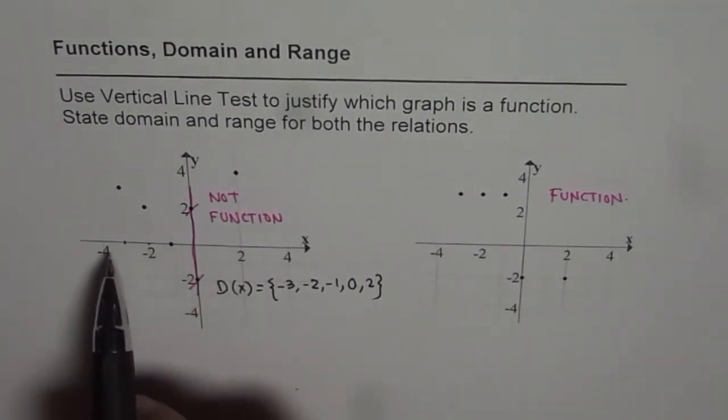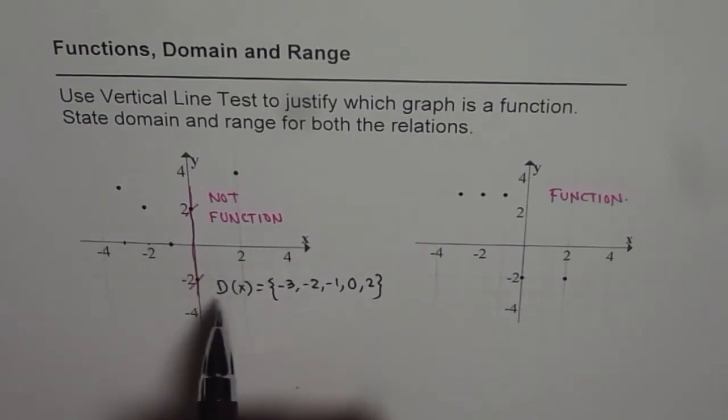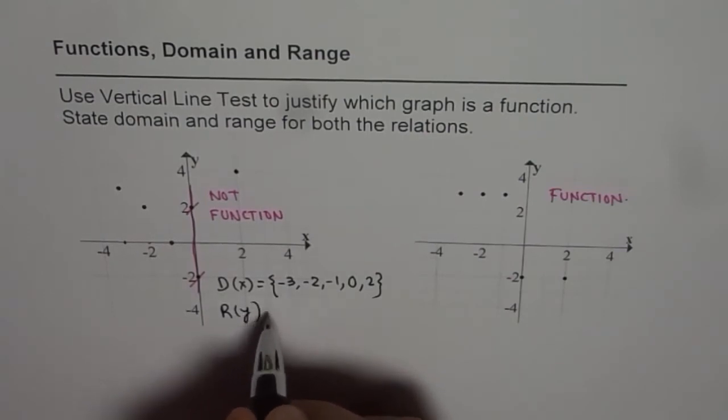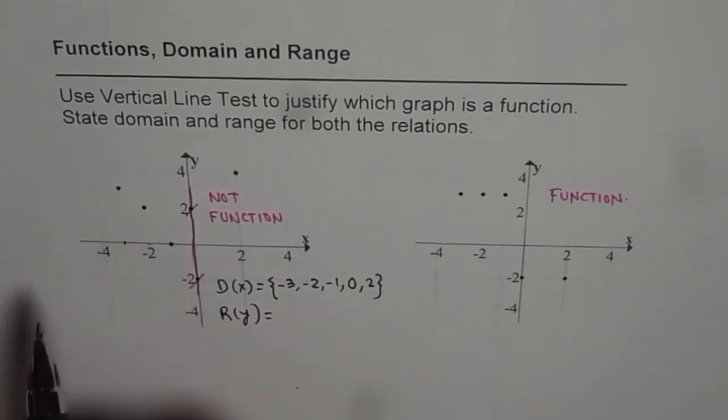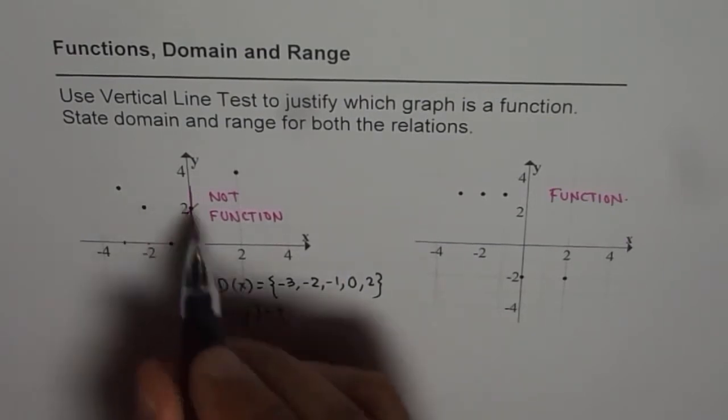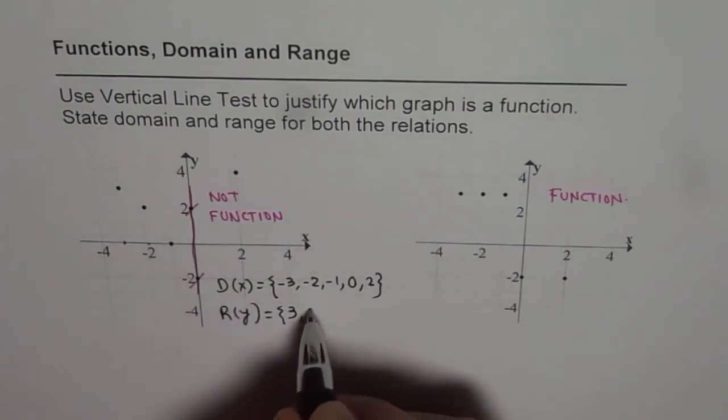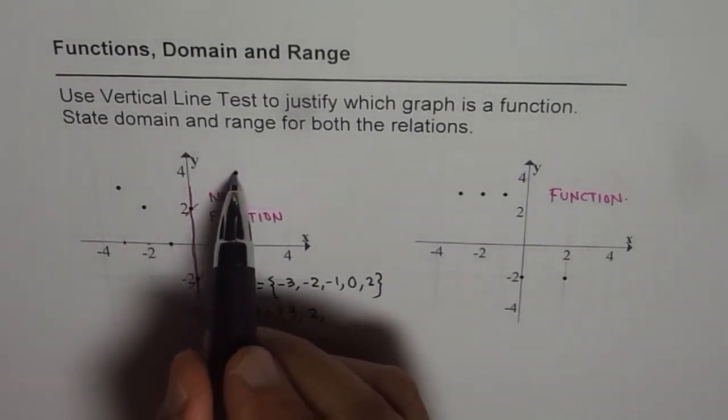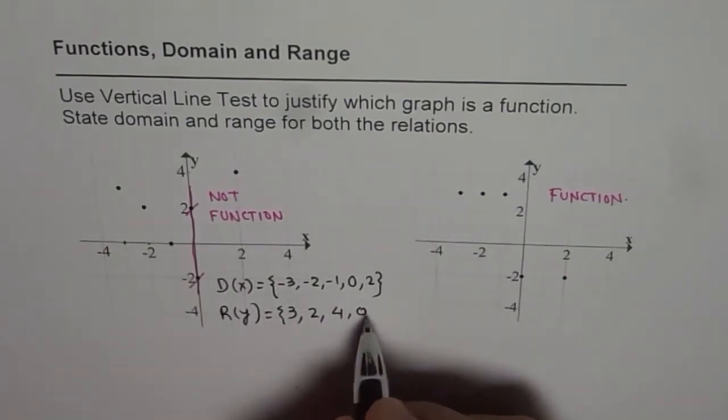Range is the y values of these coordinate points. So this point corresponds to three. So we have y value of three, and then y value of two. There are two points at two. There is one with four also. Then this is zero, and then we have minus two.